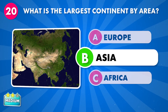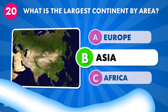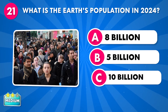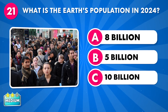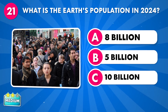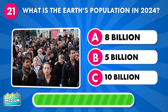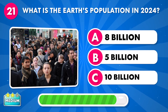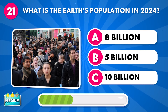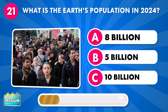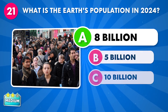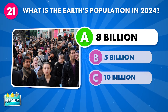Well done. What is the Earth's population in 2024? A: 8 billion, B: 5 billion, C: 10 billion. It's 8 billion.